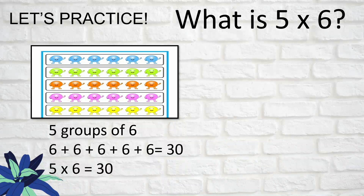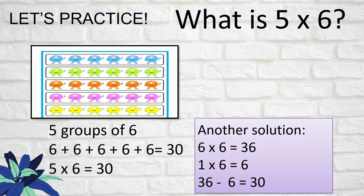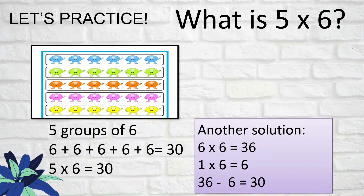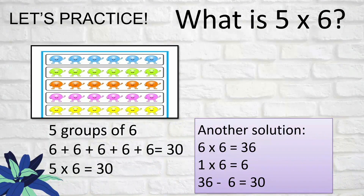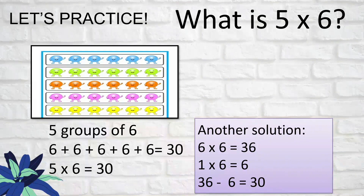Another solution: what if you forgot five times six, but you remembered six times six, which is 36? And you know one times six is six. So you subtract: 36 minus 6 equals 30. Because six minus one is five, that gives you five times six equals 30.